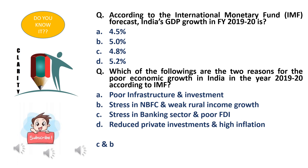The options are: option A - poor infrastructure and investment, option B - stress in NBFCs and weak rural income growth, option C - stress in the banking sector and poor FDI, option D - reduced private investments and high inflation. The right answer is option B - stress in NBFCs and weak rural income growth.